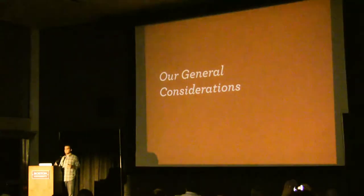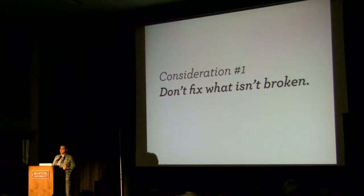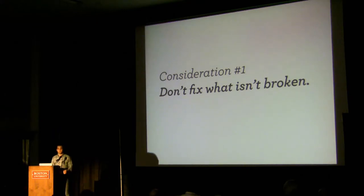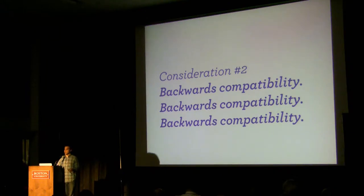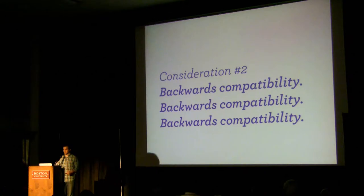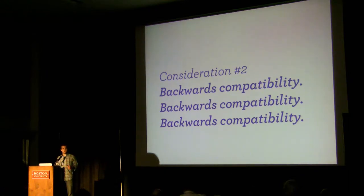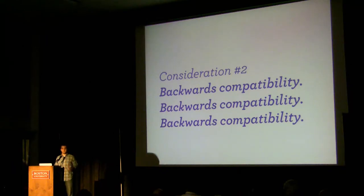Whenever you're dealing with API development, we have to think about our general considerations. The first one, as obvious as it might sound, is: don't fix what isn't broken. There are a lot of projects that like to rewrite things just because they're able to. In many cases we're actually not able to — which is consideration number two: backwards compatibility. In WordPress, we are always going to be backwards compatible during releases. No code that worked in a previous release should stop working in the current release.